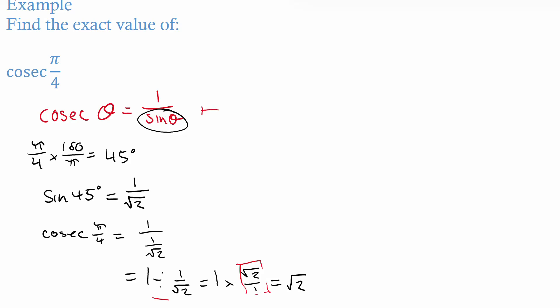To recap: I took note that cosec θ = 1/sin θ. I converted π/4 to degrees because my exact triangles on the formula sheet are in degrees. I found sine 45 = 1/root 2 using the triangle, then substituted back — cosec(π/4) = 1/sin(π/4) = 1/(1/root 2). Dividing by a fraction means we flip it, so 1 times root 2 over 1 = root 2.